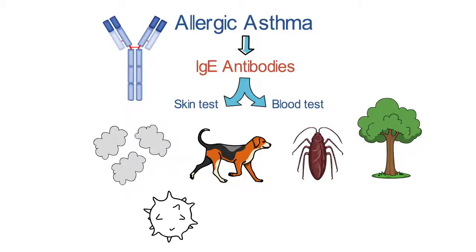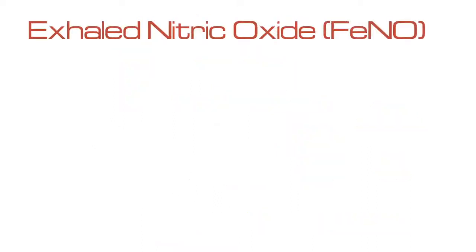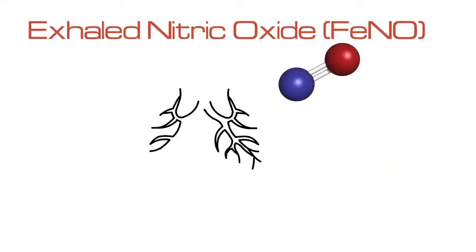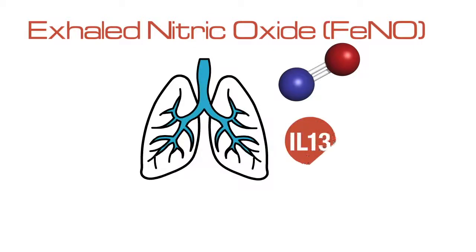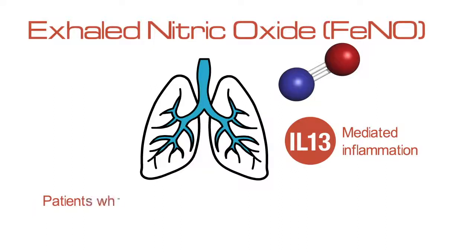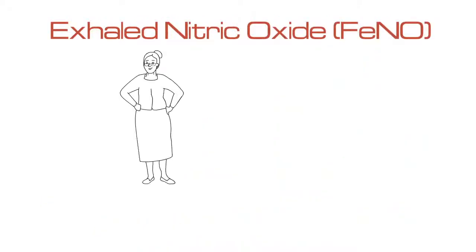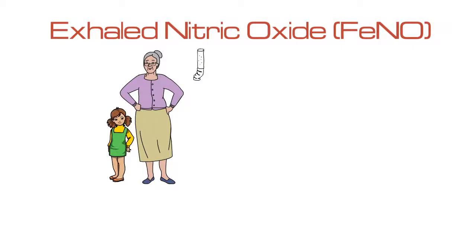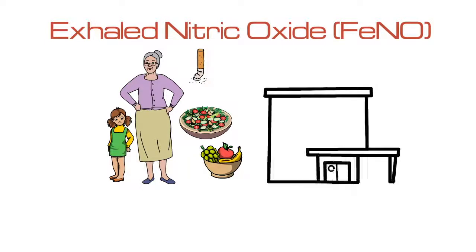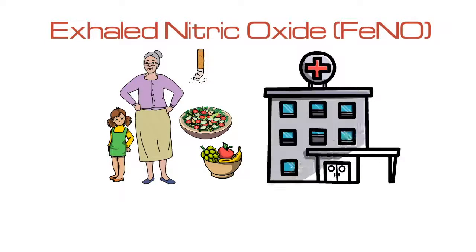Molds are particularly important for patients with asthma and can contribute to asthma severity and disease. Nitric oxide is a chemical that's released by the lungs and is a marker of IL-13-mediated inflammation. Nitric oxide can be a good marker of patients who would benefit from more corticosteroid use and can identify patients who are at risk of exacerbation. Nitric oxide is affected by age, smoking, and diet, and so needs to be interpreted carefully, but can be tested as a point-of-care test in the clinic.